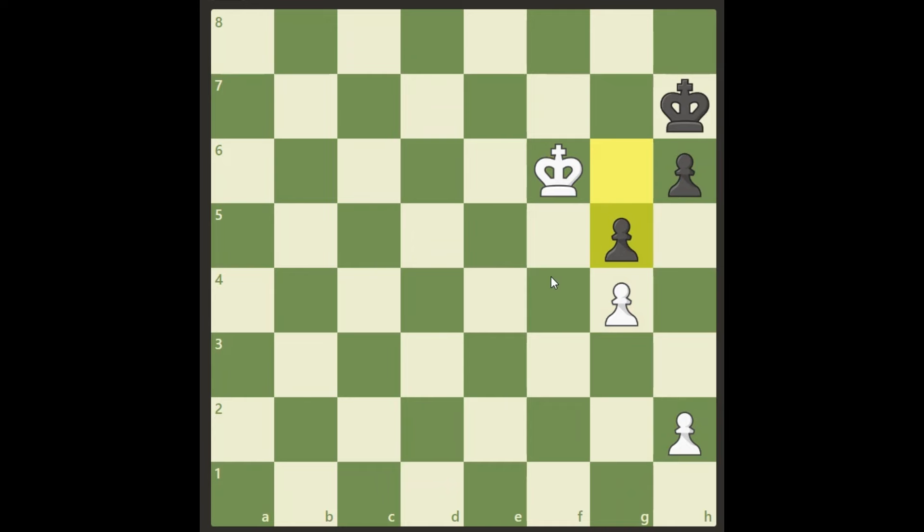So the obvious defense is now g5, and the question is from here again, it's only one move that wins for white. Can you find it?